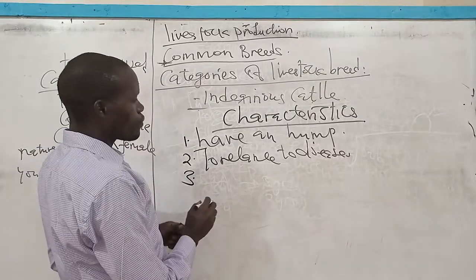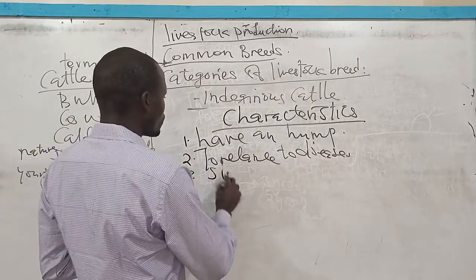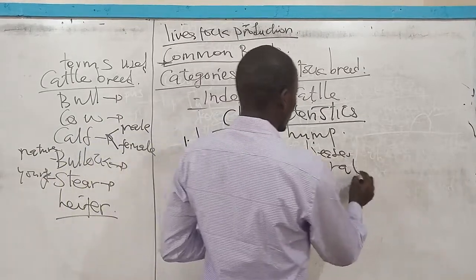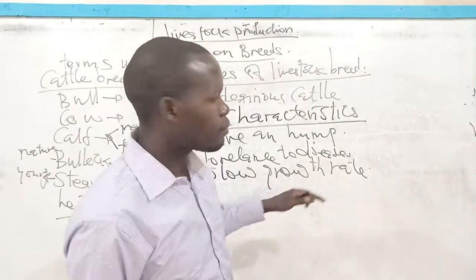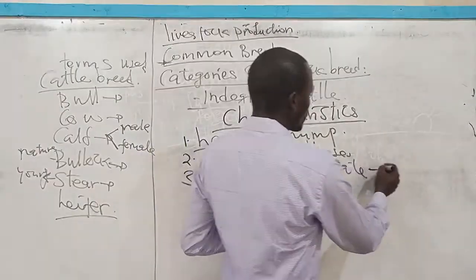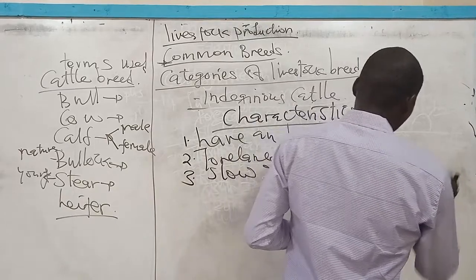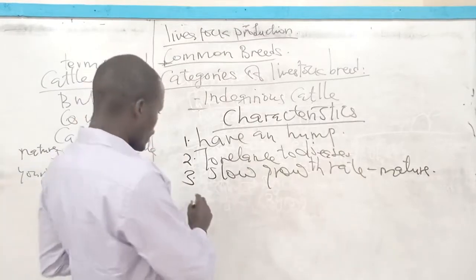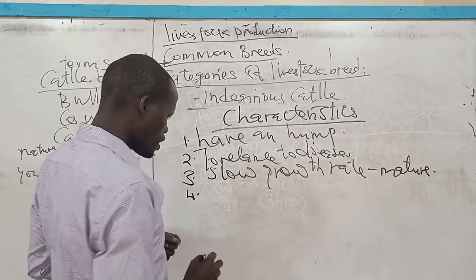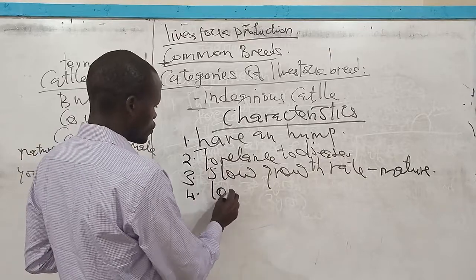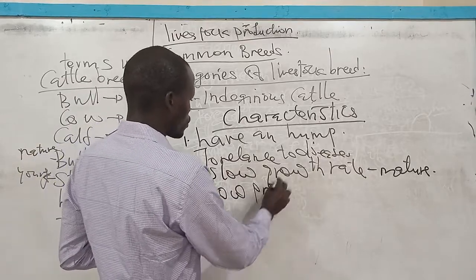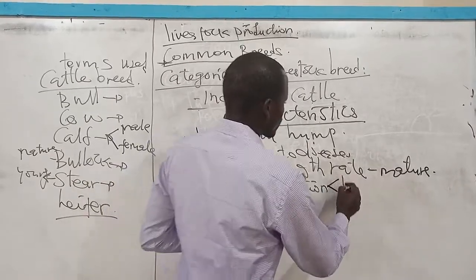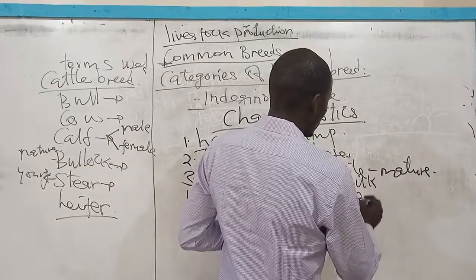The other characteristic of these cattle is that they are slow-growing. This means they take many years for them to grow and therefore become mature. Another characteristic is that they are low in production — that is, the production of both milk and meat.